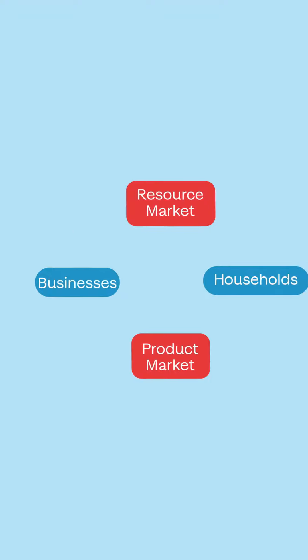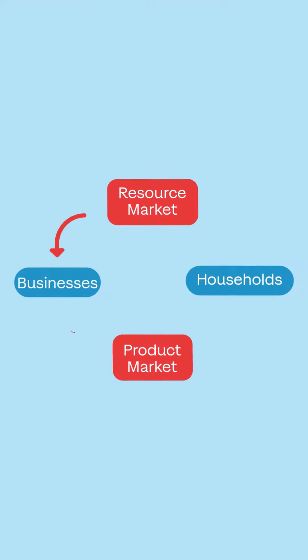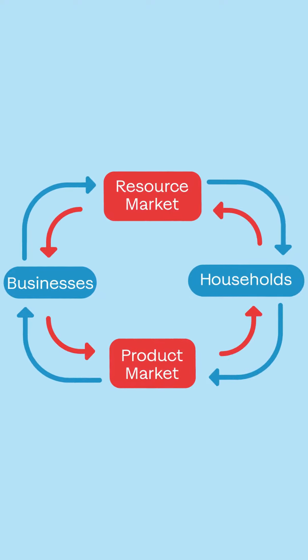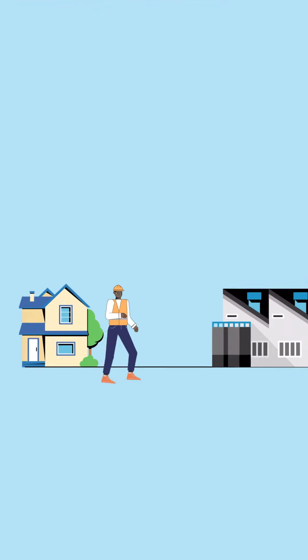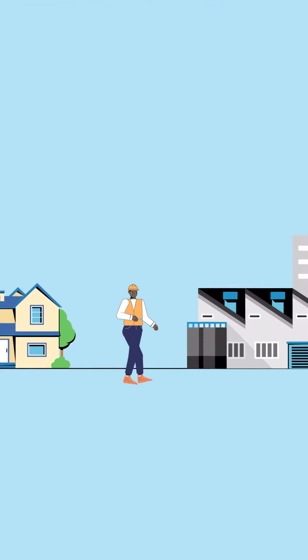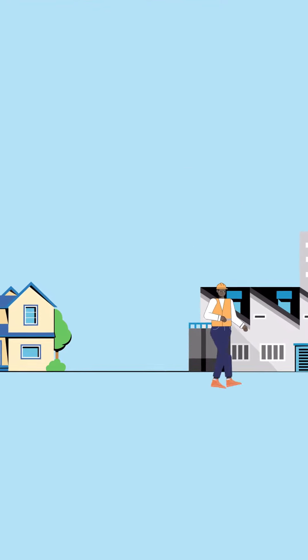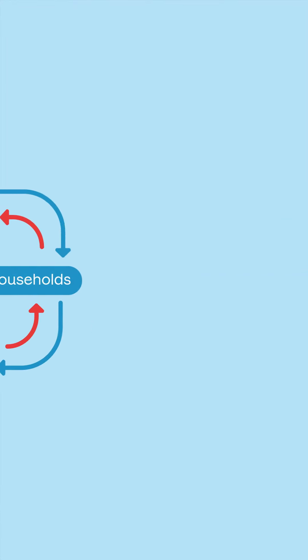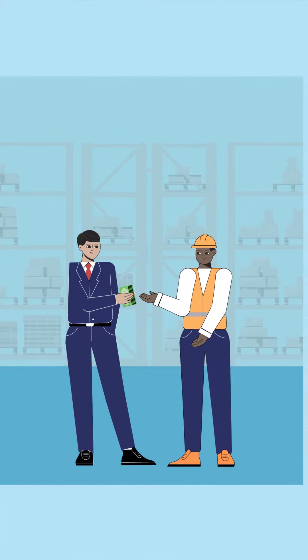First, we have a resource market. Households, or groups of people living together, provide resources to legal entities called businesses in exchange for money. Households sell the resources of time and labor. So the model shows the household's resources flowing counterclockwise to the resource market, where households sell and businesses buy. Meanwhile, money flows clockwise from businesses to households in the form of income.